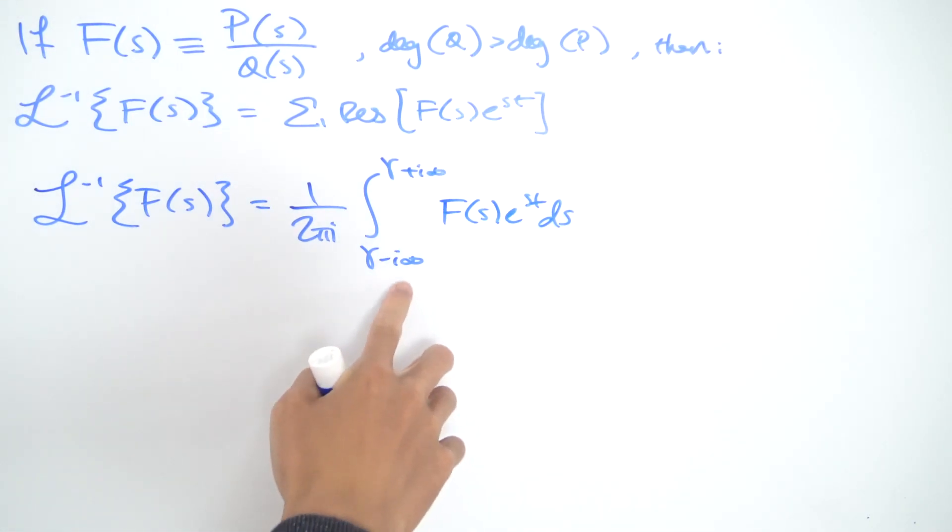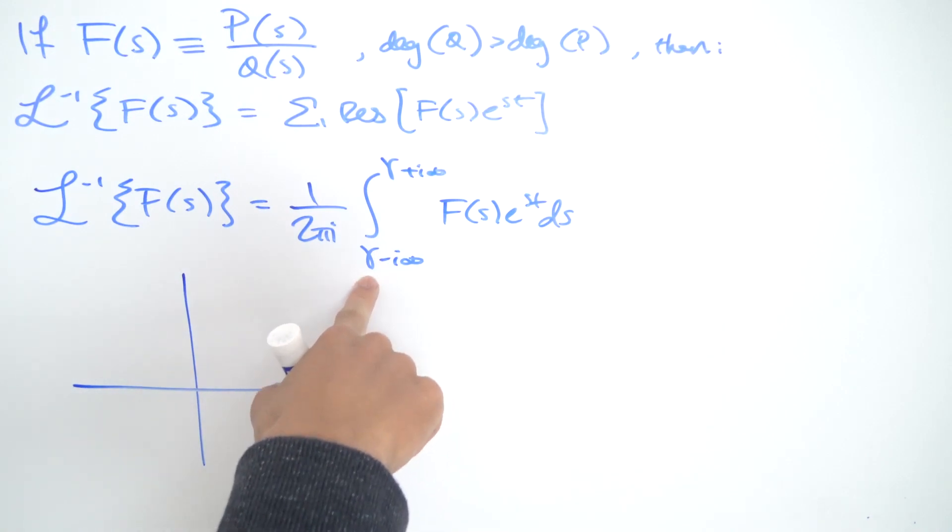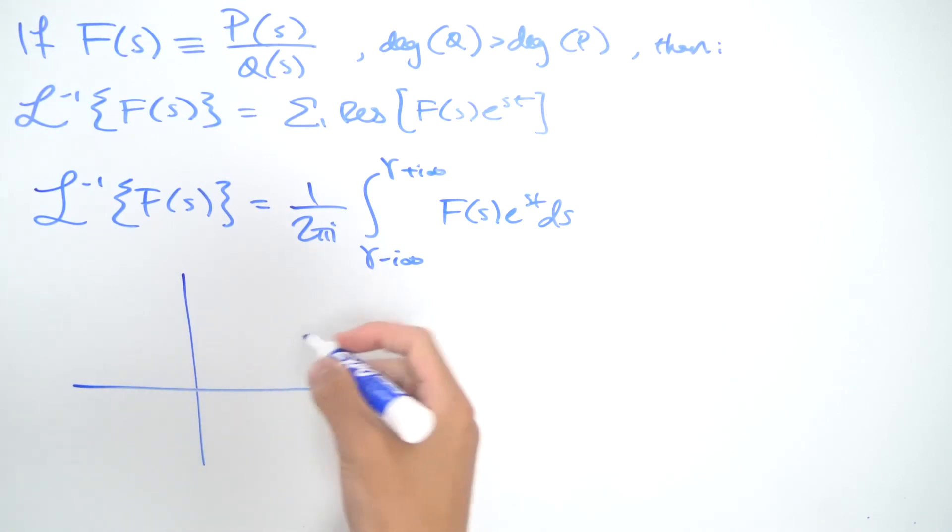If we take a look at this interval of integration, it's actually some path in the complex plane. If we take a look at what that looks like, γ is going to be some real number, so we're going to have a line that goes vertically through the complex plane, and there are some requirements we need from this path γ.